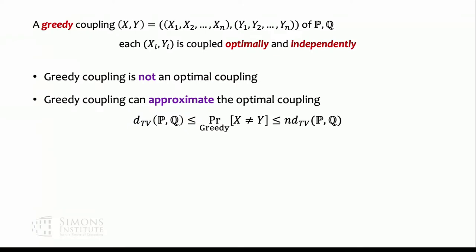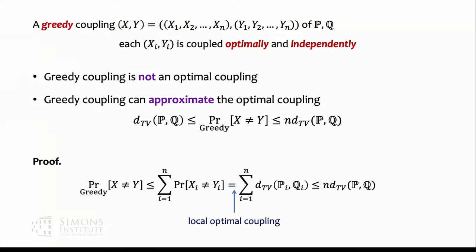Although the greedy coupling is not optimal, it is not far from optimal. In the greedy coupling, P(x ≠ y) ≥ TV(p, q) by the coupling lemma. On the other hand, this probability is at most n times the TV distance — by a union bound, P(x ≠ y) ≤ Σ P(xi ≠ yi) = Σ TV(pi, qi) ≤ n · TV(p, q), using the fact that marginal TV distances are smaller than the overall TV distance.